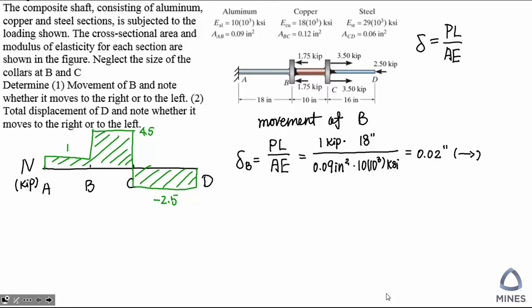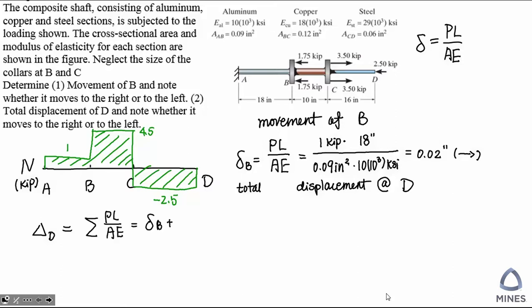Now let's look at the second part — we need to calculate the total displacement of D. If the BC segment has a length change, will plane D move? Yes. If the length of CD changes, will plane D move? Yes. So the movement at D is not just one segment anymore; it's going to be associated with all the segments that have a length change. The total movement at D is the sum of all the axial deformations.